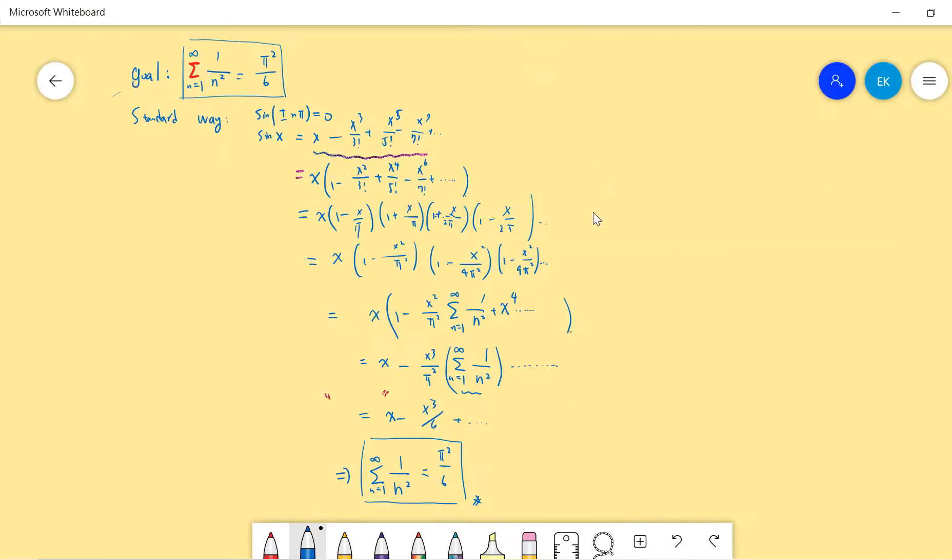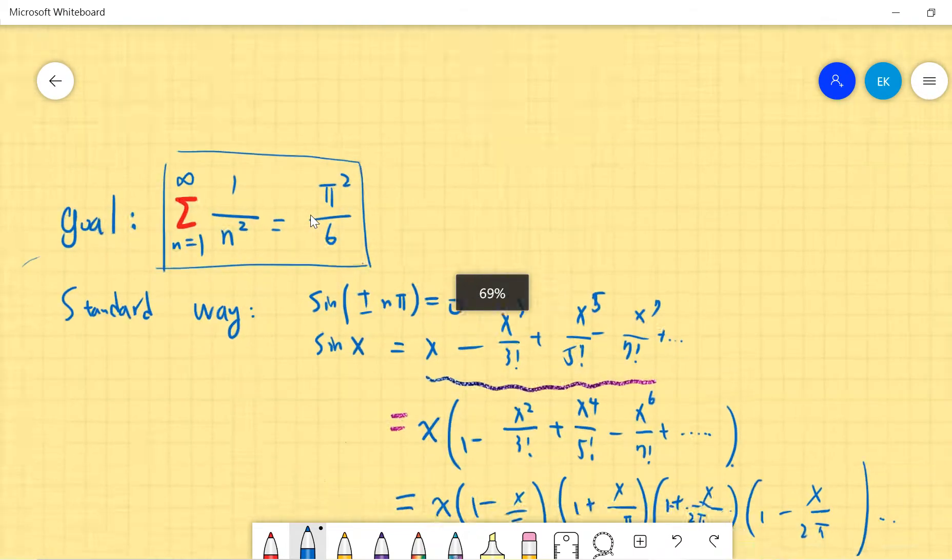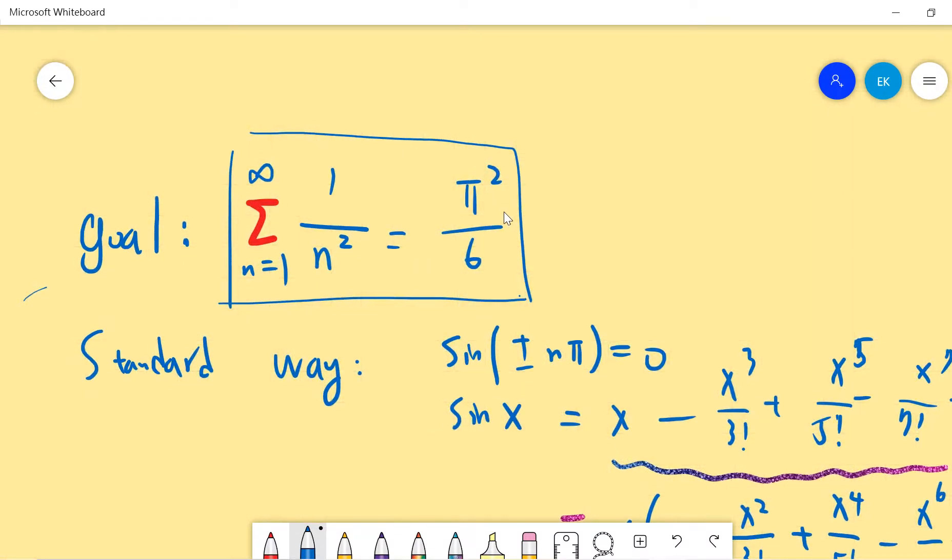So today we want to prove, using the standard approach, that the sum of 1 over n squared equals π² over 6. This is the standard result, very famous.